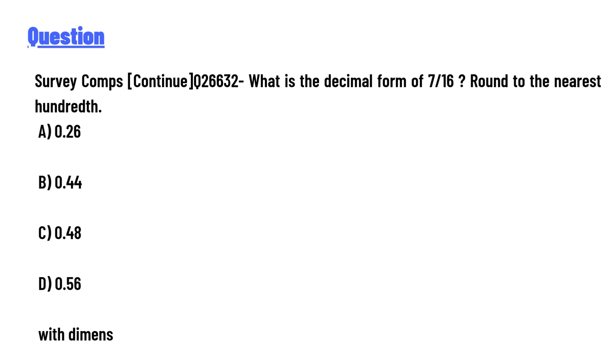Survey Comps Continue Question 26632: What is the decimal form of 7 over 16? Round to the nearest hundredth. A) 0.26, B) 0.44, C) 0.48, D) 0.56.